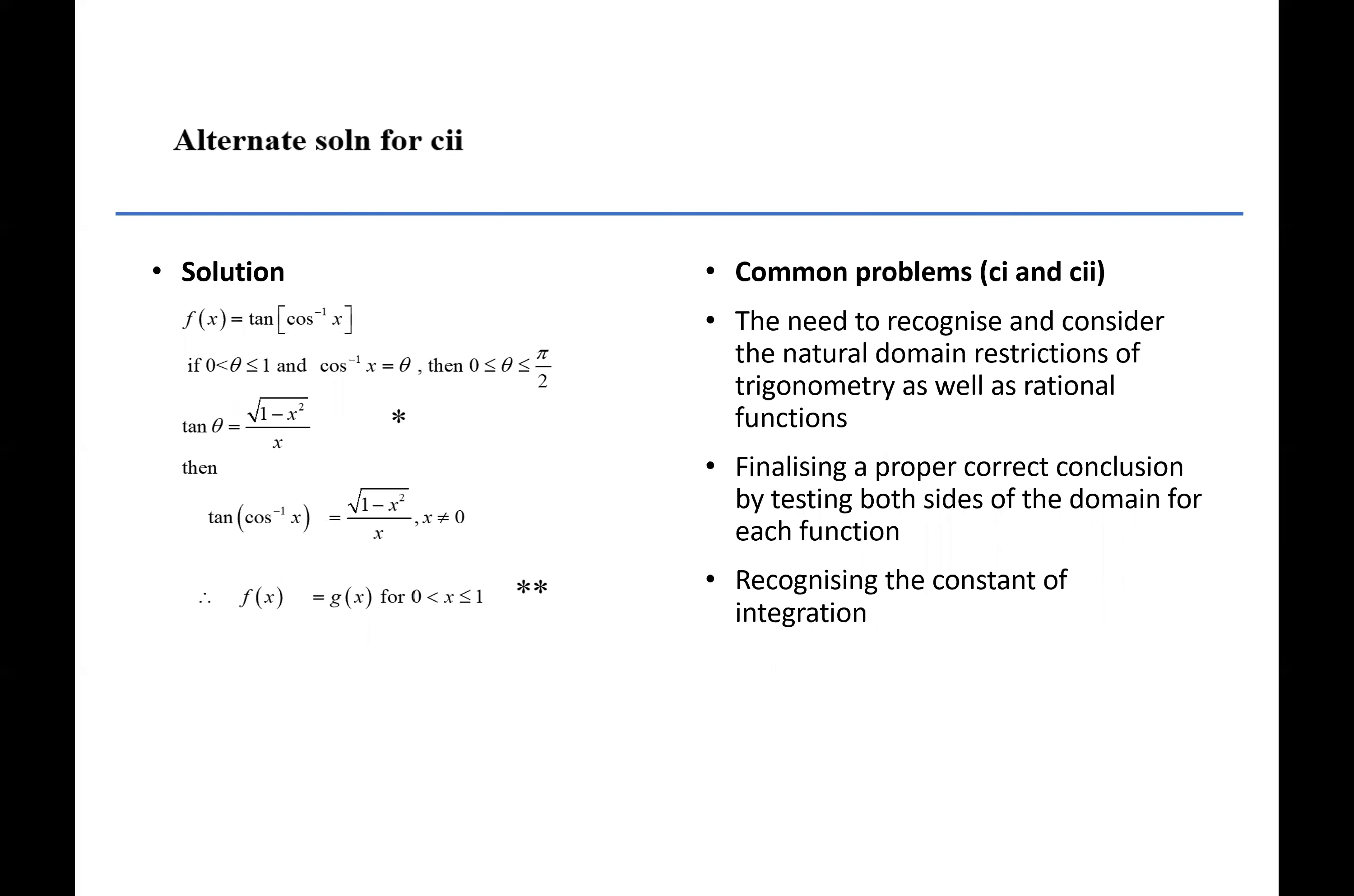The common problems for the alternative solution was recognizing natural domain restrictions for trigonometry as well as rational functions, and then finding a proper correct conclusion by testing both sides of the domain for each function, and of course recognizing the constant of integration. For part C, many students were able to get at least one mark but by mixing up the various methods they either omitted domain restrictions or incorporated stuff that was not required.